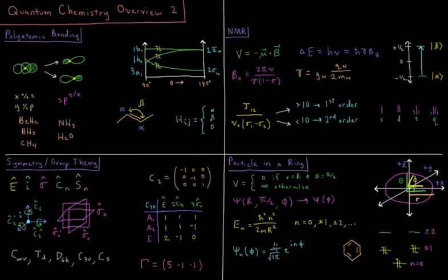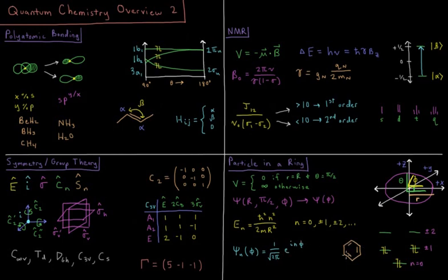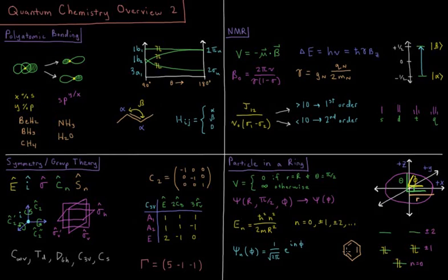Our wave functions are normalized plane waves, e to the i n phi, and we can use this to explain things like Huckel's rule for aromaticity and anti-aromaticity, and to predict the absorption wavelengths for pi-to-pi star transitions in aromatic molecules.